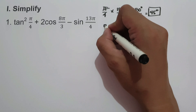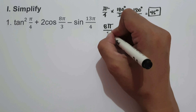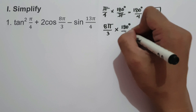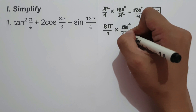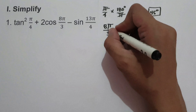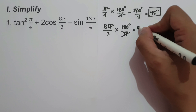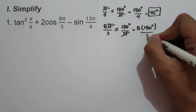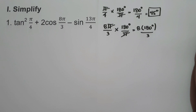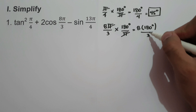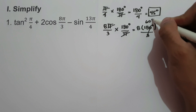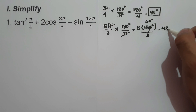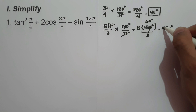Next, let us convert 8 pi over 3. Multiply by 180 degrees over pi, cancel pi, and we have 8 times 180 degrees over 3. 180 degrees divided by 3 is 60, and 60 times 8 is 480 degrees.